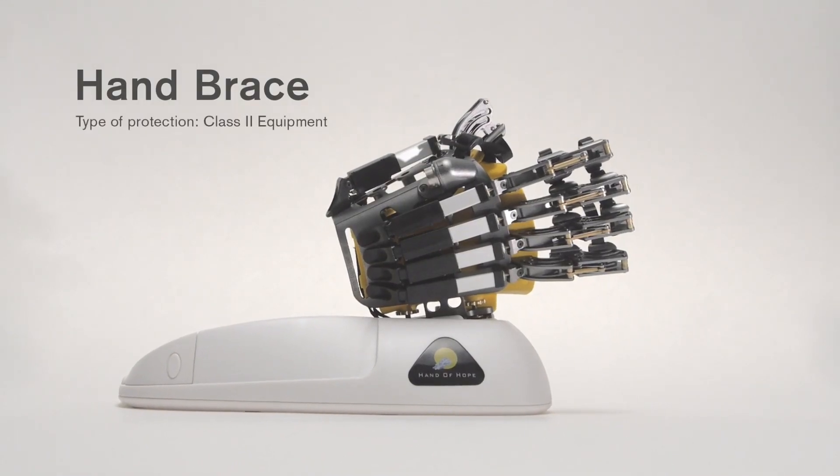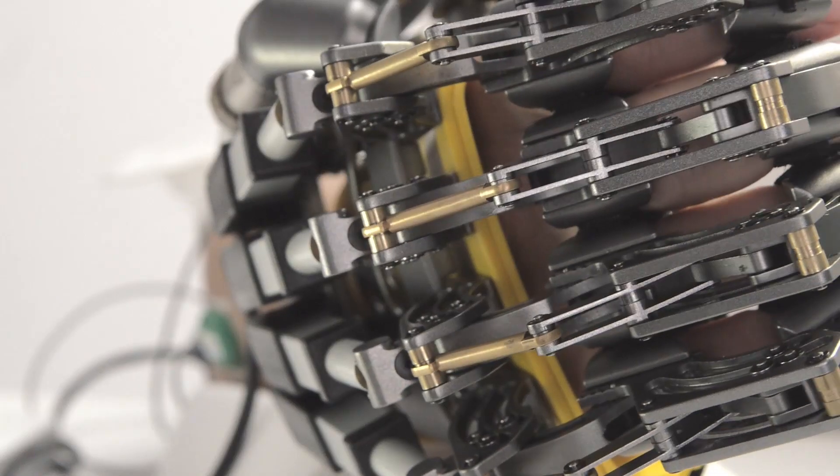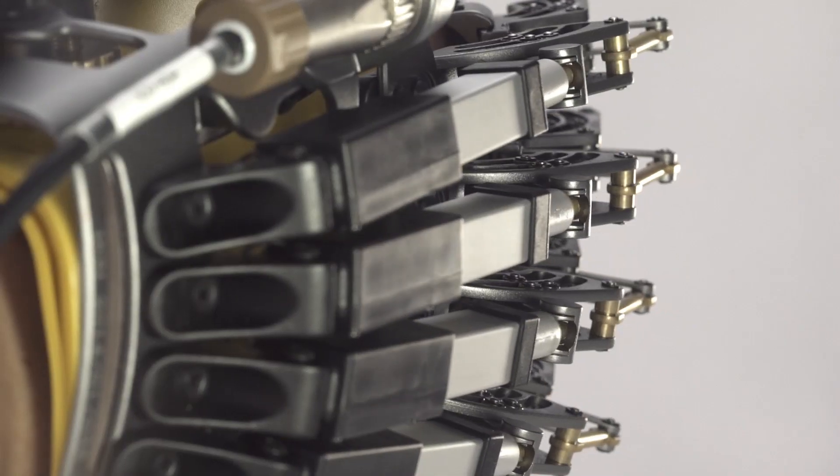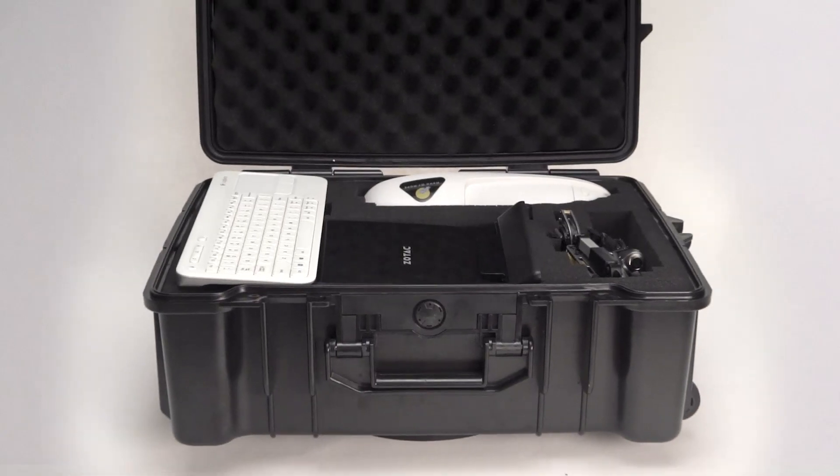Hand of Hope is an innovative, active and assistive robotic device which uses EMG signals and exoskeleton to help patients in motor relearning after brain injury or stroke. Learn more about Hand of Hope at rehab-robotics.com or order a trial now.